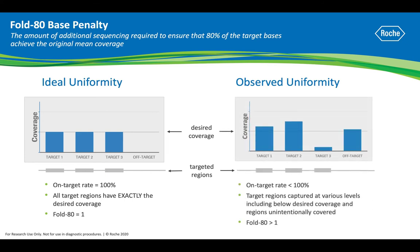However, typical sequencing results often look more like the graph on the right. Here, the on-target rate is less than 100%, and the target regions are covered at various levels, including targets below the desired coverage. In addition, sequencing reads are wasted on off-target regions. Thus, the Fold 80 Base Penalty is greater than 1 because more sequencing is needed to achieve the mean coverage for 80% of the targets.